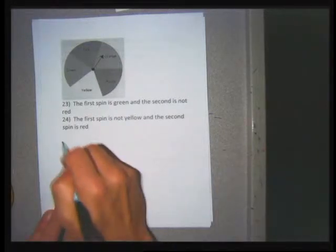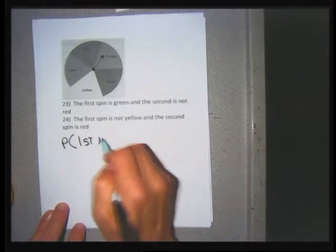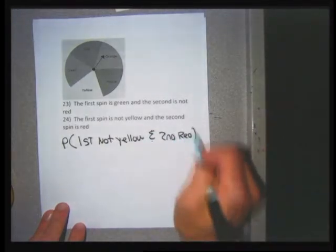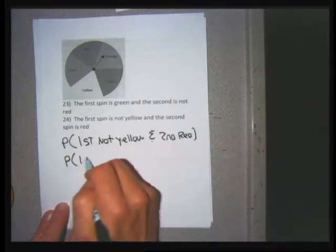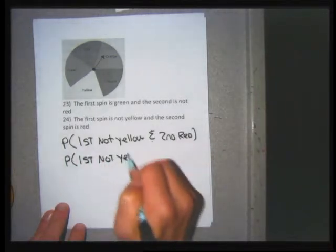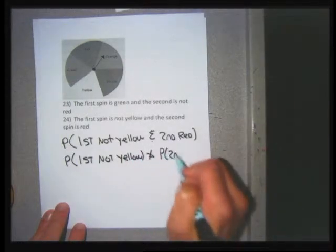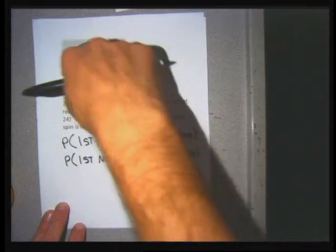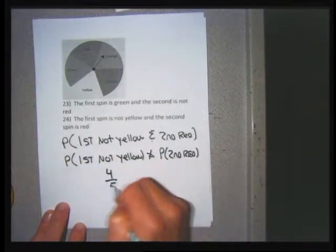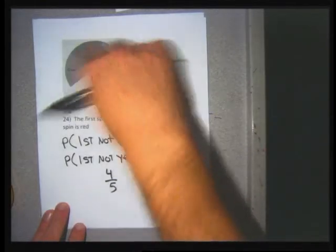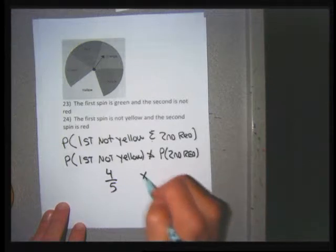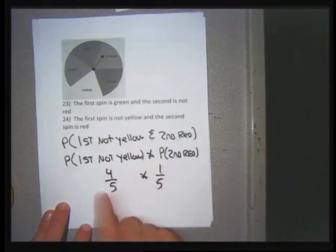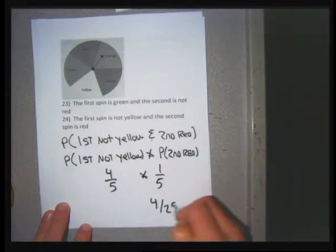For problem 24, I need the probability that the first spin is not yellow and the second is red. There are 4 of the 5 regions that aren't yellow — purple, orange, red, and green — so there's a 4 in 5 chance of spinning something other than yellow. There's 1 red region of the 5, so the probability of red is 1 over 5. Multiplying: 4/5 × 1/5 = 4 over 25.